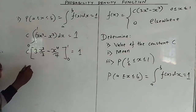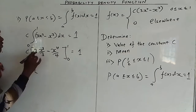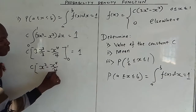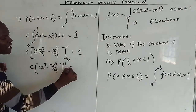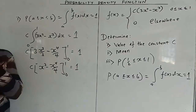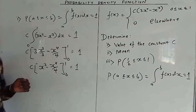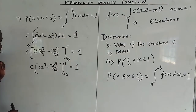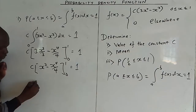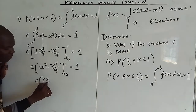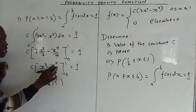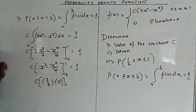Simplifying inside the bracket, the 3 cancels with the denominator 3, leaving x³ - x⁴/4 from 0 to 1. Substituting the upper limit x = 1: we get 1 - 1/4 = 3/4. For the lower limit x = 0, we get 0.